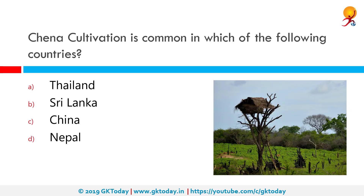Chena cultivation is common in which of the following countries? It is very common in Sri Lanka. Chena cultivation or shifting agriculture is the most primitive type of agriculture, practiced in Sri Lanka and some other Asian countries. It does not make use of the same piece of land but goes on rotation of crops.